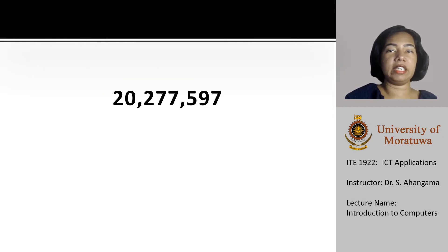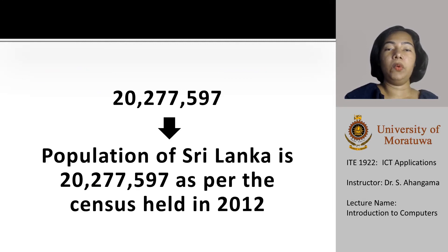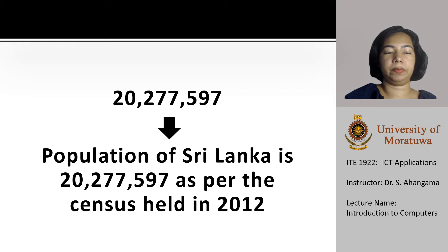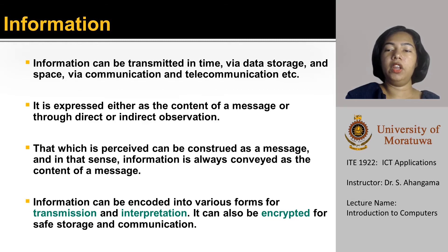Now, let us consider this. We have included a context. It is the population of Sri Lanka as per the census held in year 2012. So, now you can understand the difference between data and information. Information can be transmitted in time via data storage and space via communication and telecommunication.